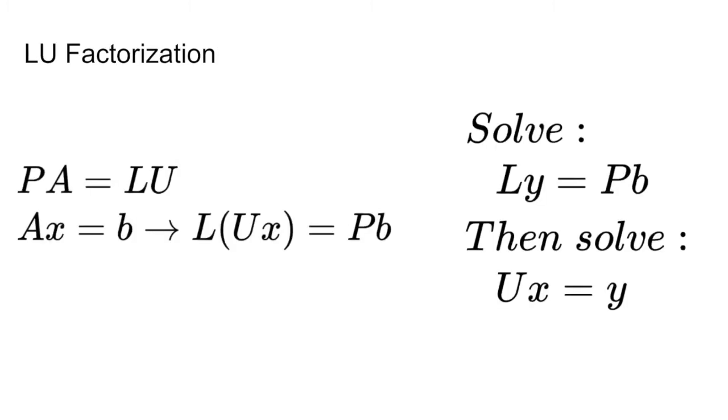A quick reminder of LU factorization. If A can be written as the product of a lower triangular matrix L and an upper triangular matrix U, we can use this to more easily solve for x. In our case, we have PA equals LU, and we can take the original solution Ax equals b and transform that into L(Ux) equals Pb.